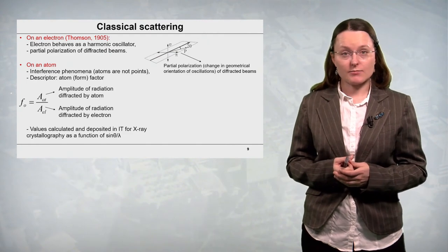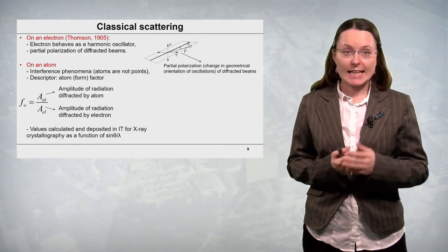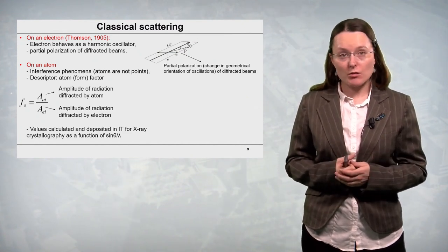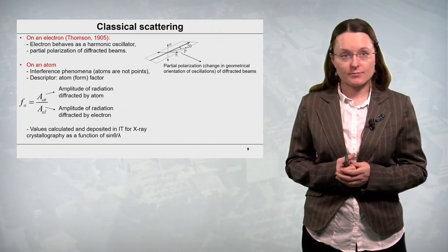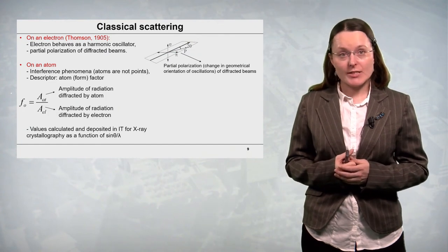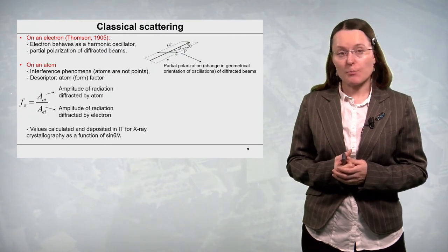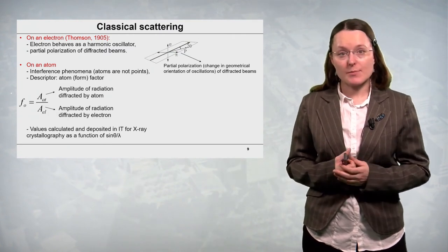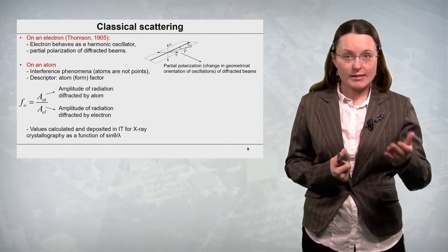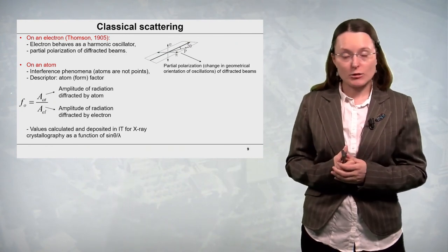So, let's focus on the classical scattering. We can consider it at different levels. Let's start with the level of an electron. This is covered by the theory of Thomson proposed in 1905. In the theory of Thomson an electron behaves as a harmonic oscillator and the diffracted beams are partially polarized with respect to the incident radiation. So, polarization is defined as change in geometrical orientation of oscillation with an electromagnetic wave.